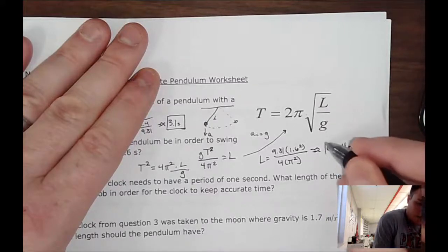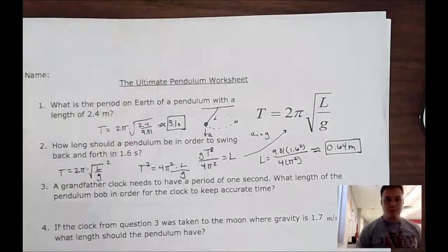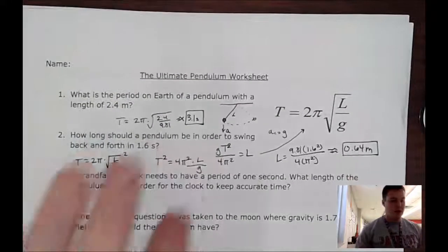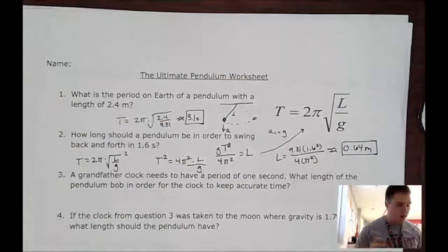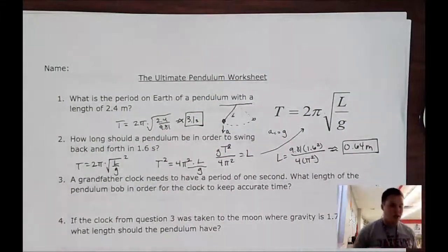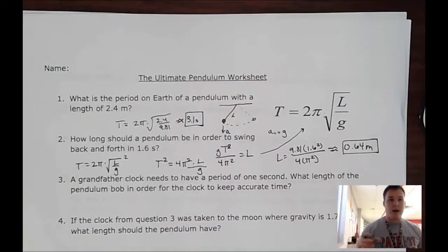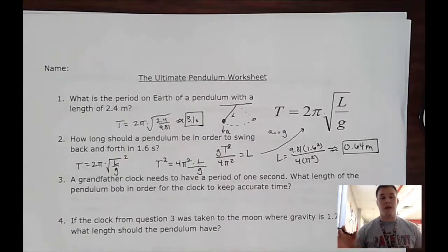Same equation, just solved for a different variable. A grandfather clock needs to have a period of one second. So this is how old clocks used to keep time in seconds. It had a very long pivot arm or a pendulum arm.